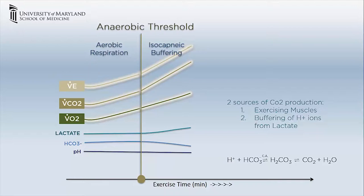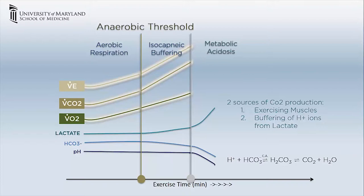As the lactate continues to rise, the buffering capacity is overwhelmed. As a result, in the third phase, metabolic acidosis sets in, forcing the person to stop exercising. In this phase, oxygen consumption continues to rise and carbon dioxide production continues to rise out of proportion to oxygen consumption due to buffering of lactate. There are now two reasons driving an increase in minute ventilation: an increase in carbon dioxide production, and the body trying to compensate for metabolic acidosis. As a result, the increase in minute ventilation is steeper — it is out of proportion to both oxygen consumption and carbon dioxide production. This results in a decrease in PaCO2.